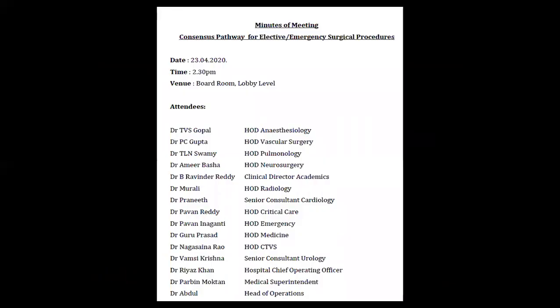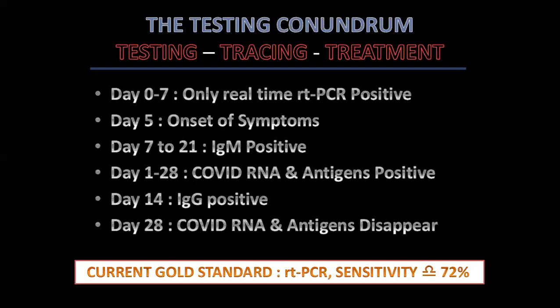We held a meeting earlier this week with heads of various departments to establish a consensus pathway for both elective and emergency surgical procedures going forward. There are three keys when dealing with a contagious disease: testing, tracing, and treatment. As far as treatment, there is no credible treatment so far. Tracing is being done by local authorities. We don't have antigen testing, and rapid antibody kits that were made available have been rejected by the ICMR because they were faulty.